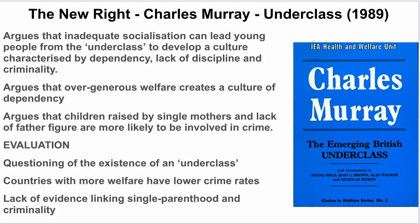The main sociologist for the new right is Charles Murray. Murray talks about the underclass and argues that because of inadequate socialization, some people from the underclass can develop a culture characterized by dependency, a lack of discipline, and criminality. Murray also argues that an over-generous welfare state — government handouts — creates a culture of dependency, and criticizes single-parent families, arguing that young people, particularly young men without father figures, are more likely to be involved in crime.